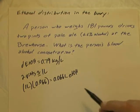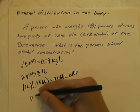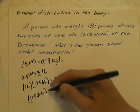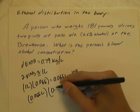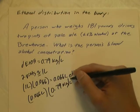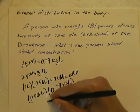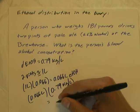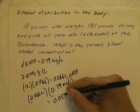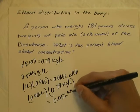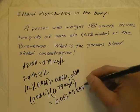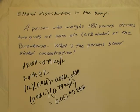The mass of that ethanol is 0.66 liters times the density of alcohol, which is 0.79 kilograms per liter. That equals 0.052 kilograms of ethanol that the person has consumed in total, or about 52 grams.